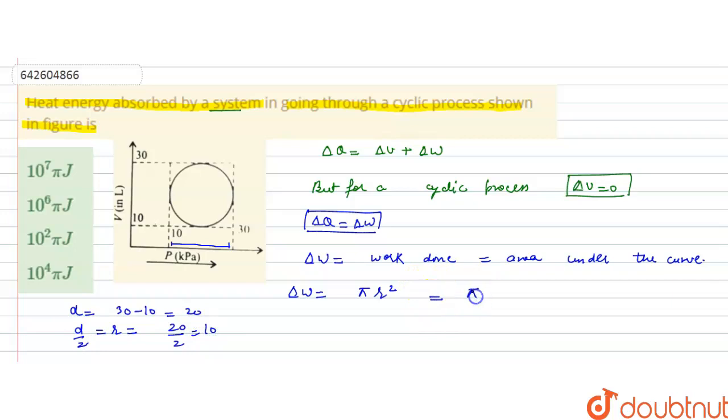So, it means, it will be pi into 10 square, that is, 100 pi. But the units are kilopascal and litre. So, this is the work done. But the units are given as joules.